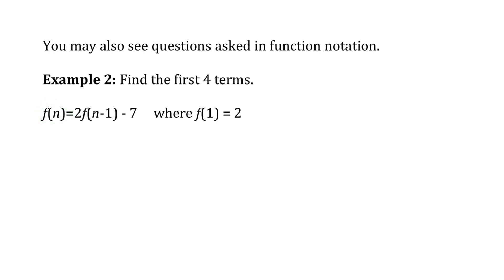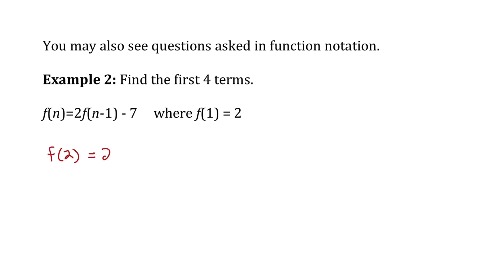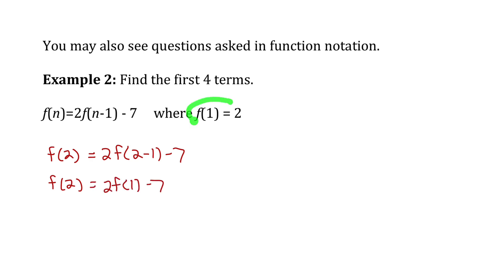So to find the first four terms, we work with the equation in function notation. It gives us the value of the first term as 2. To find the second term, f(2), we sub in 2 for n: f(2) equals 2 times f(2-1) minus 7. Simplifying, f(2) equals 2 times f(1) minus 7. And f(1) is 2, so I'll replace f(1) with 2. When simplifying, f(2) equals negative 3.